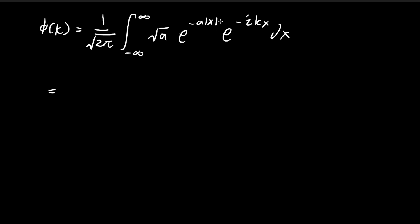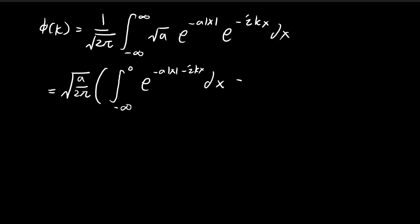The first problem that presents itself is the absolute value. To deal with it, we need to separate the integral into two parts. The first part goes from negative infinity to 0, and the second part goes from 0 to infinity. We're simply breaking the integral into these two regions so that we can remove the absolute value sign.